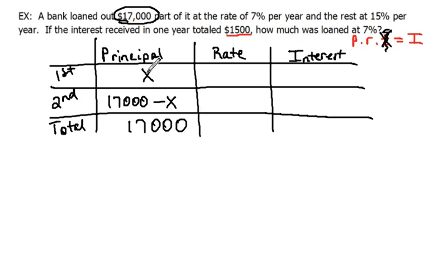Now the first account has an interest rate of seven percent, so that would be point zero seven, and the other account has fifteen percent, so that would be point one five. Now what else did they tell us here? They said the interest received in one year was fifteen hundred dollars. That's our total interest, fifteen hundred dollars. So I'm putting it in the total interest entry there.